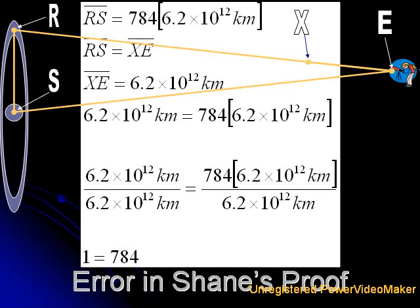If we do increase RS as Shane did at 3 minutes and 42 seconds into his video, we must note that the rules of geometry still don't change. In other words, RS must equal XE, and XE still equals 6.2 times 10 to the 12th kilometers, or 6.2 trillion kilometers.